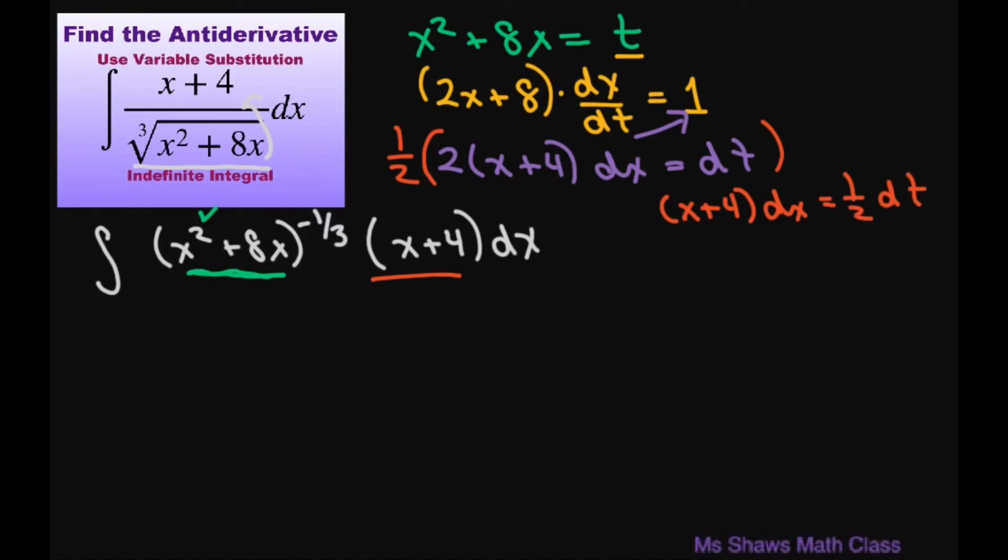All right, let's do our substitution. So this is going to end up being the integral of t to the power of negative one-third. That's that piece. This piece is one-half dt. So times one-half dt.